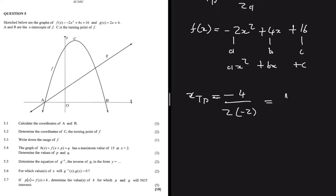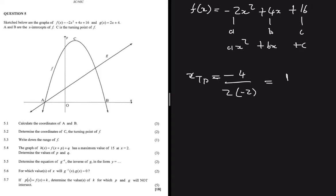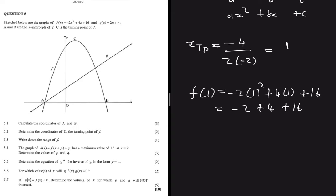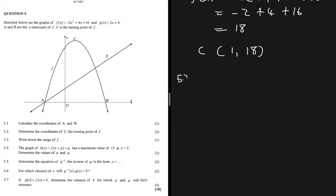With x = 1, we substitute into f(x): f(1) = -2(1)² + 4(1) + 16 = -2 + 4 + 16 = 18. So the coordinates of C are (1, 18).